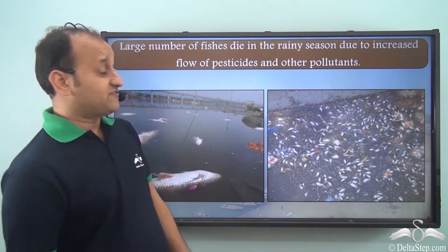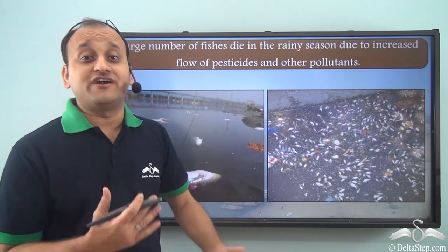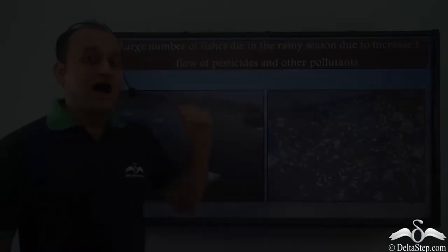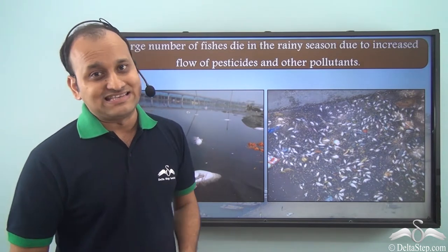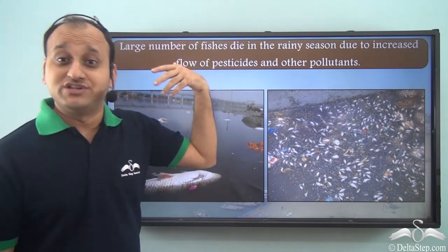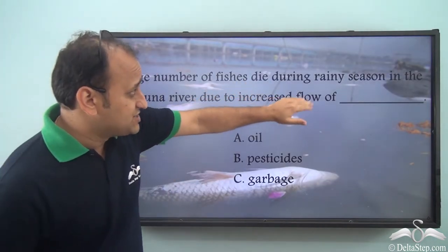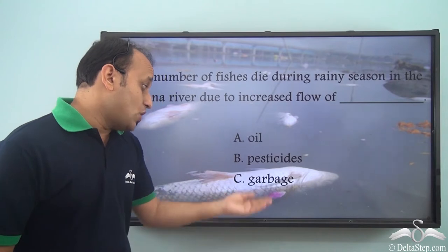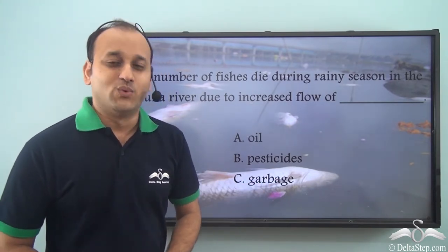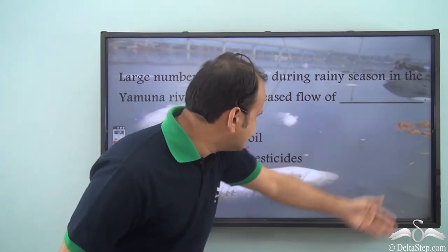Because of such high levels of pollution, large numbers of fish die in the rainy season due to increased flow of pesticides and other pollutants. In the rainy season, all the different types of pollutants as well as pesticides are washed off the land into the river. As a result, pollution levels increase significantly during rainy season, causing large numbers of fish to die. So large numbers of fish die during rainy season in the Yamuna River due to increased flow of pesticides.